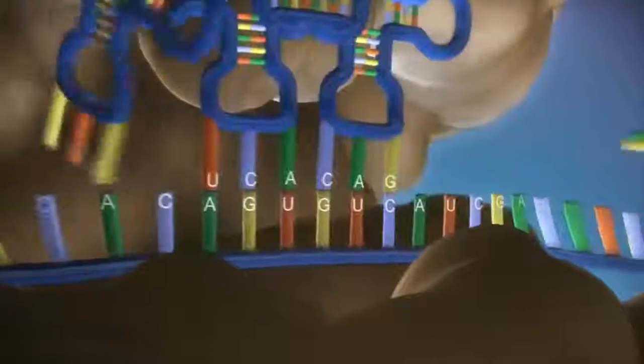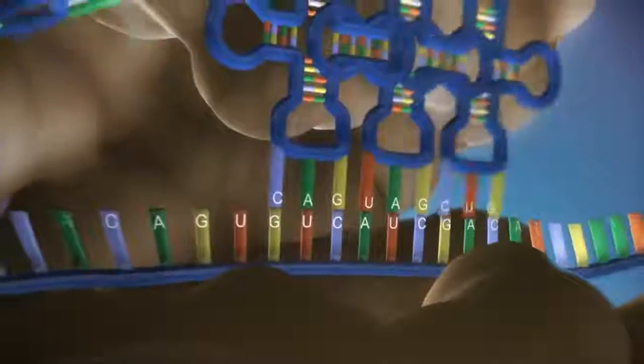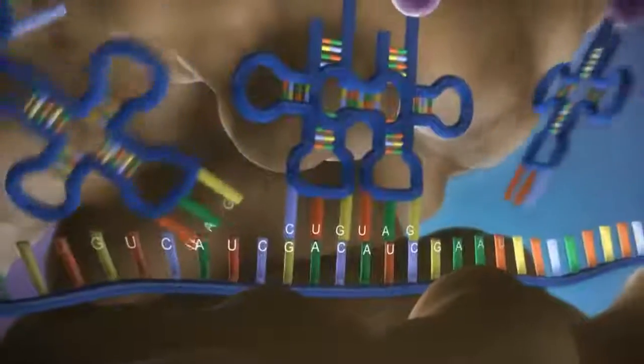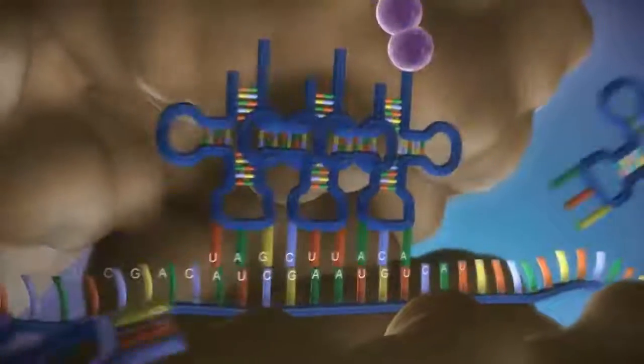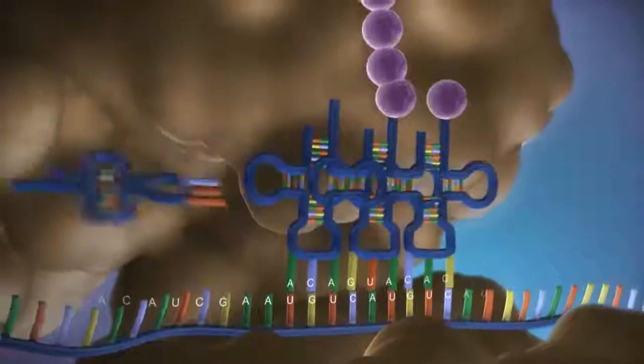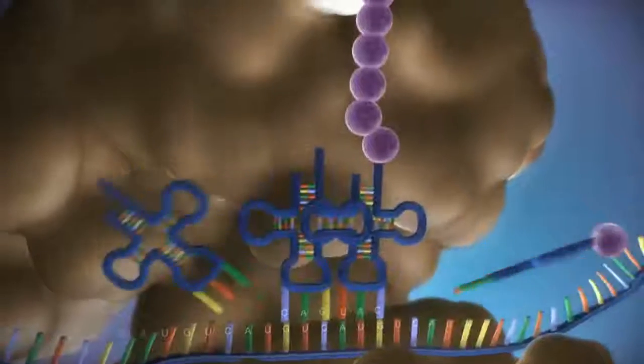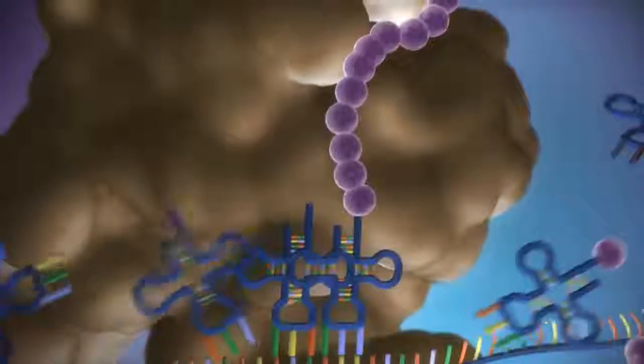The messenger RNA is read three bases at a time. As each triplet is read, a transfer RNA delivers the corresponding amino acid. This is added to a growing chain of amino acids.